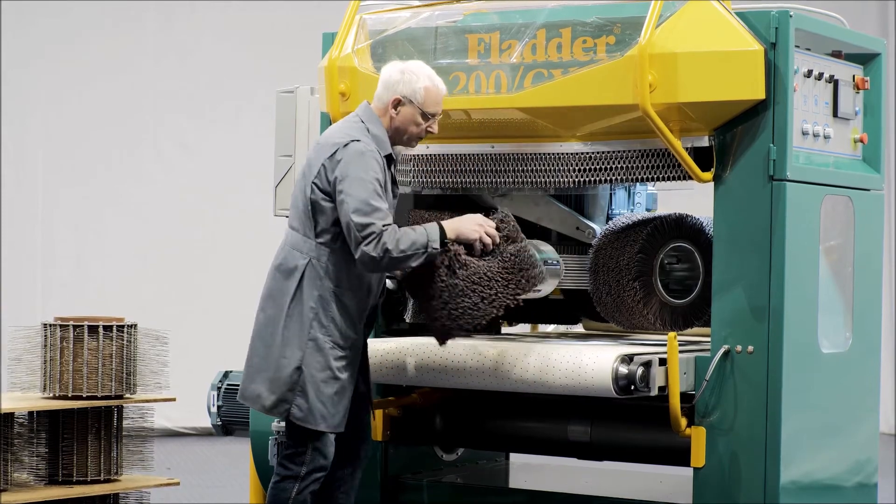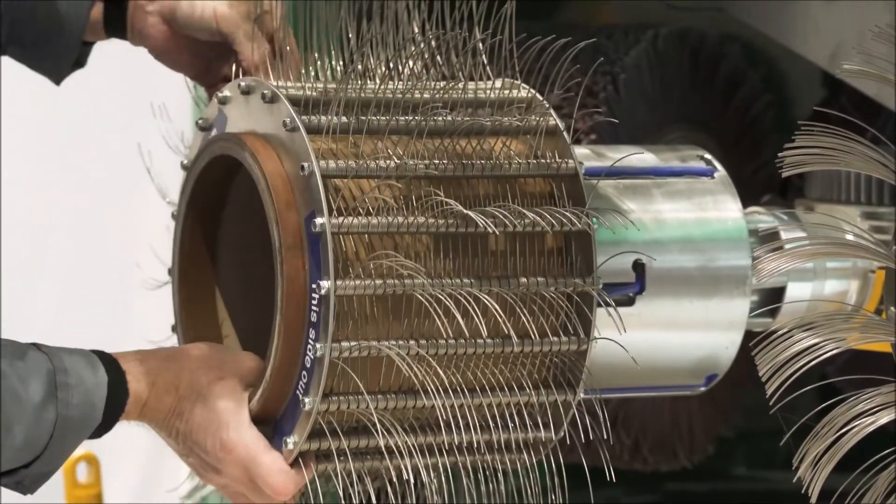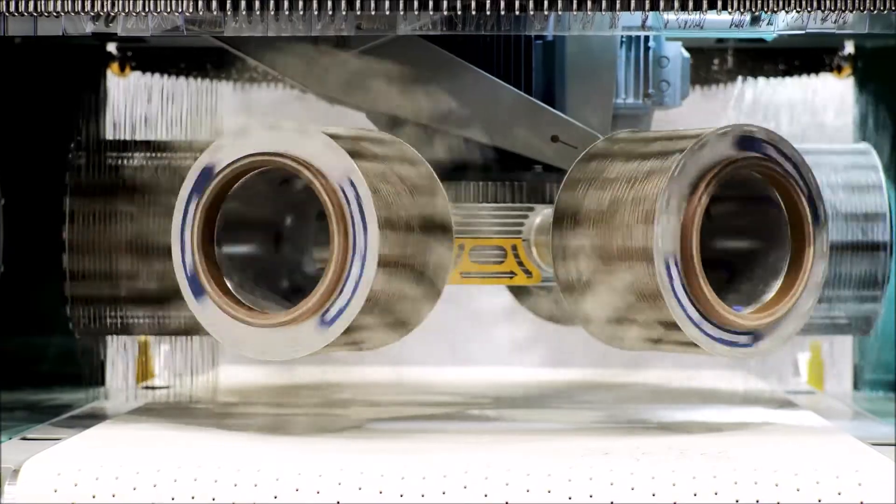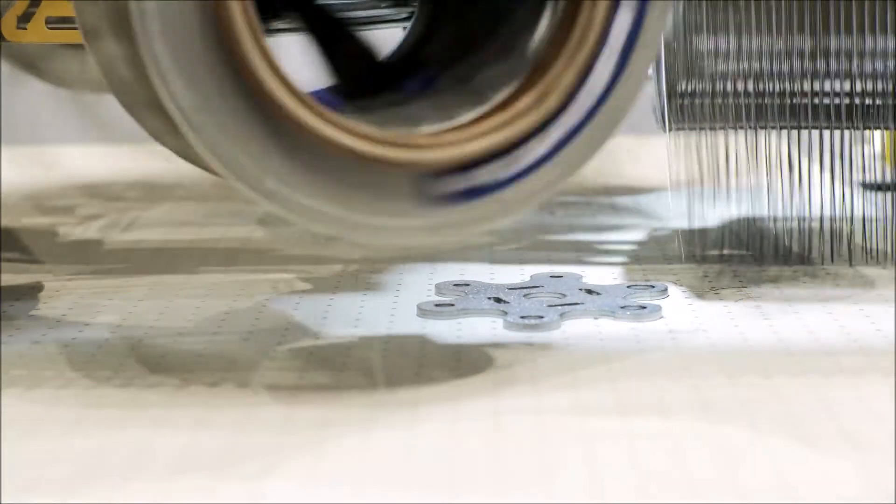It is also possible to remove oxides on the edges by using special tools for metal. These are spring threaded cylinders that knock the oxides off the edges perfectly.